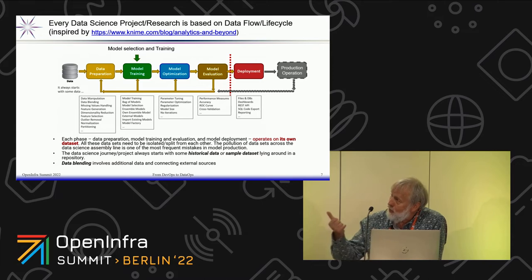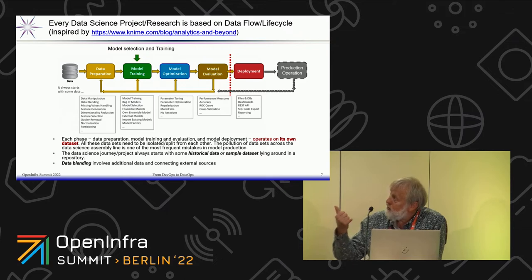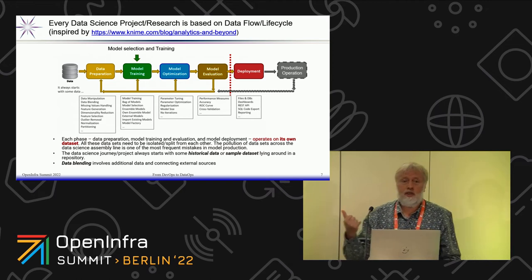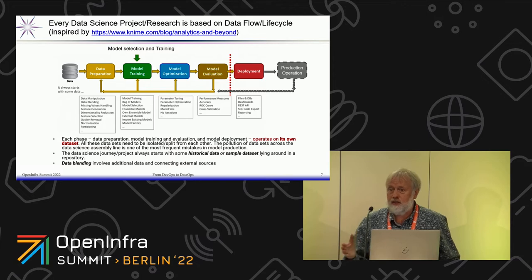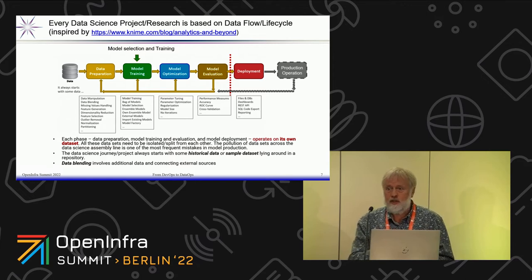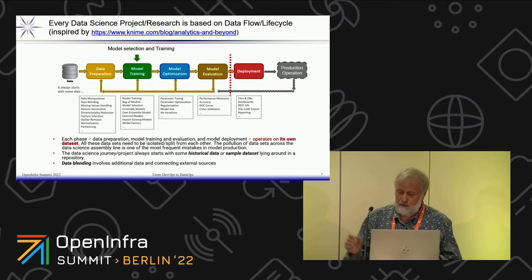This model shows two groups: one related to data science part development, and the second covering deployment, production, and operations. An important recommendation is that data used in different stages should be kept separate — because if you mix or intersect them, you get model drift and problems in the final product.